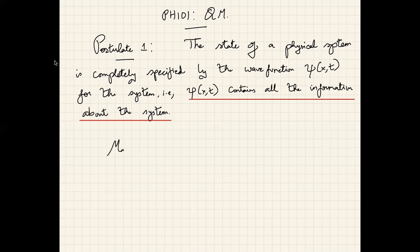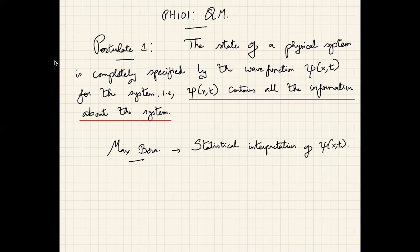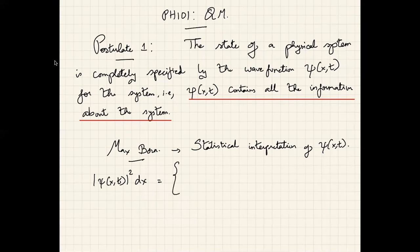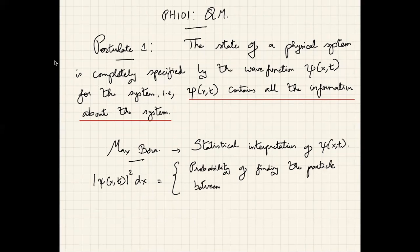One possible way of understanding what ψ(x, t) means from the probabilistic point of view was given by the famous scientist Max Born. He introduced what is called the statistical interpretation of the wave function. Basically, ψ(x, t) is in general a complex number, but if you calculate the modulus |ψ(x, t)|² dx, this quantity measures the probability of finding the particle between x and x + dx at time t.